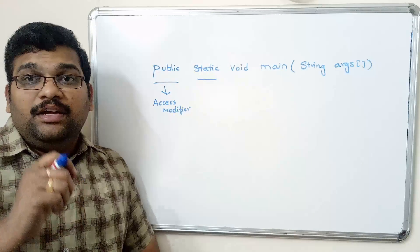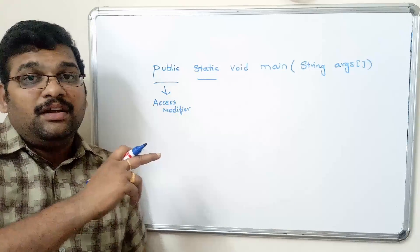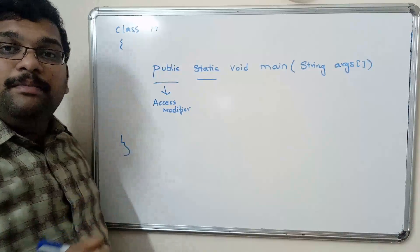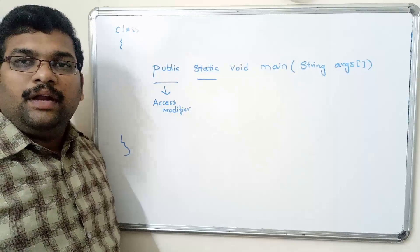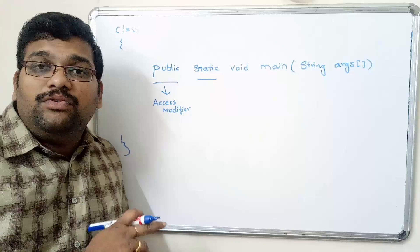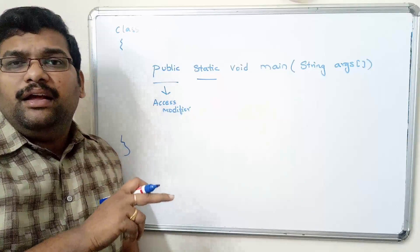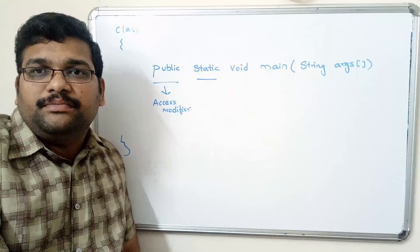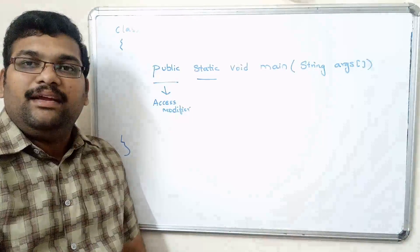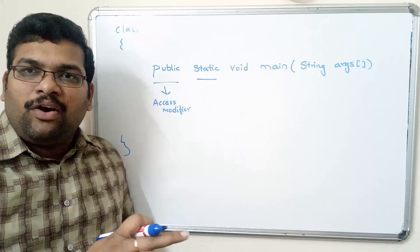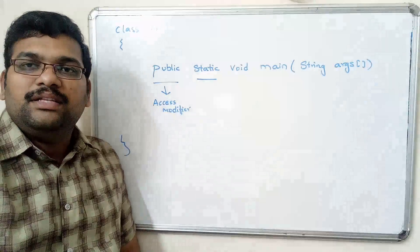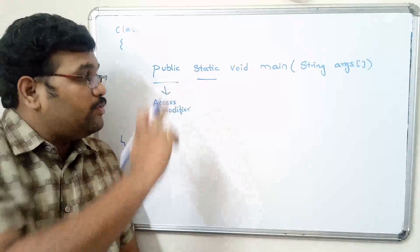Main is also one type of method, and we are writing this main function inside one class. So in order to access this method, compulsorily we would have to create an object and through that object access the main function. But if you declare this main method as static, we need not create an object for accessing it — we can directly access this main function. That is the purpose of using the static keyword.